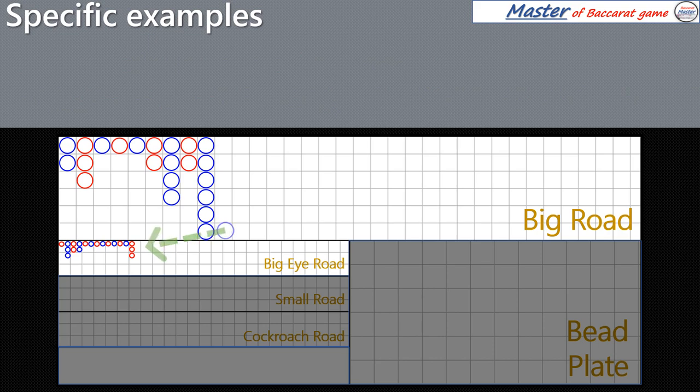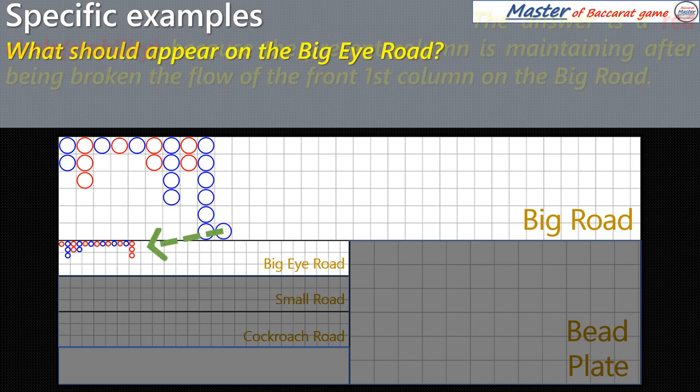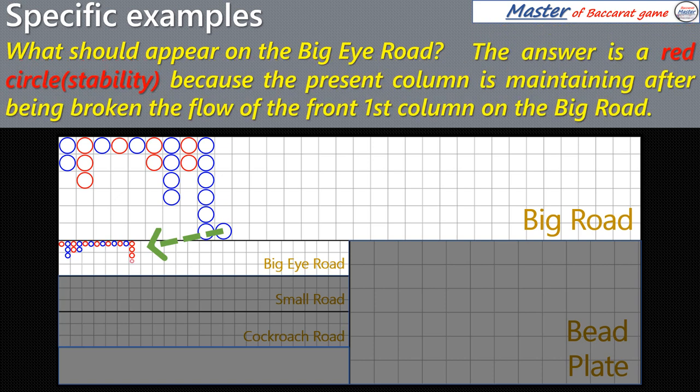What should appear on the Big Eye Road? The answer is a red circle, because the present column is maintaining after being broken the flow of the front first column on the Big Road.